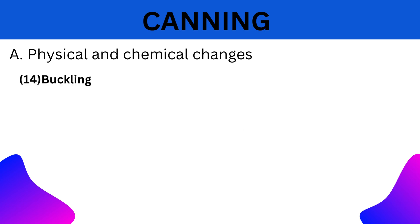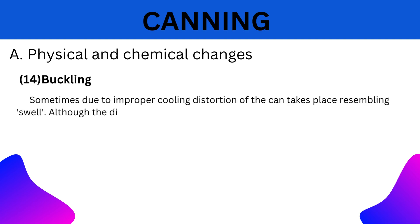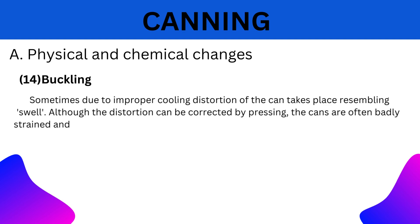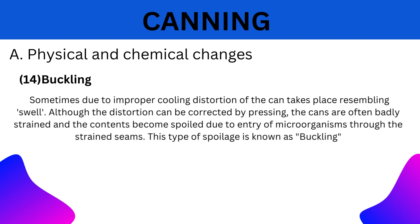14. Buckling: Sometimes due to improper cooling, deterioration of cans takes place resembling swells. Although the deterioration can be corrected by pressing, the cans are often badly strained and contents become spoiled due to the entry of microorganisms through the strained seams. This type of spoilage is known as buckling.